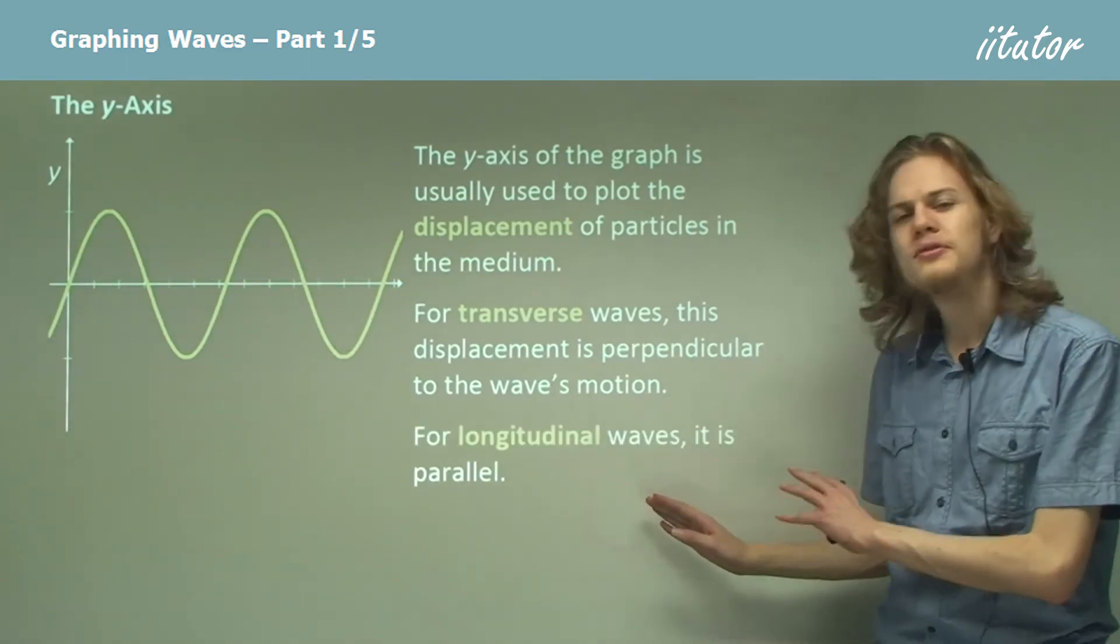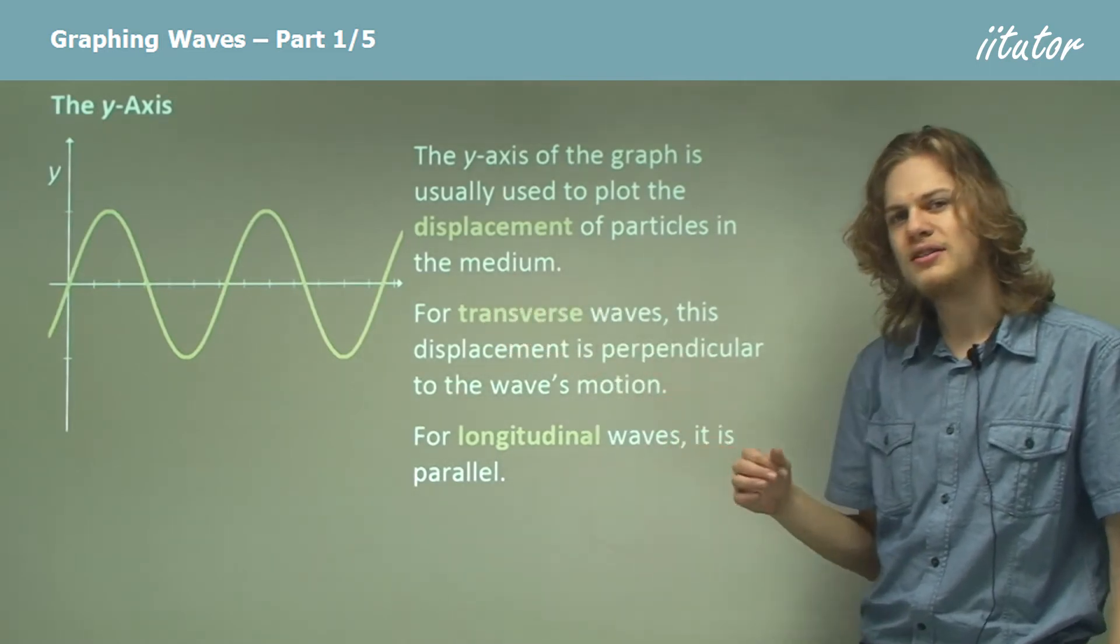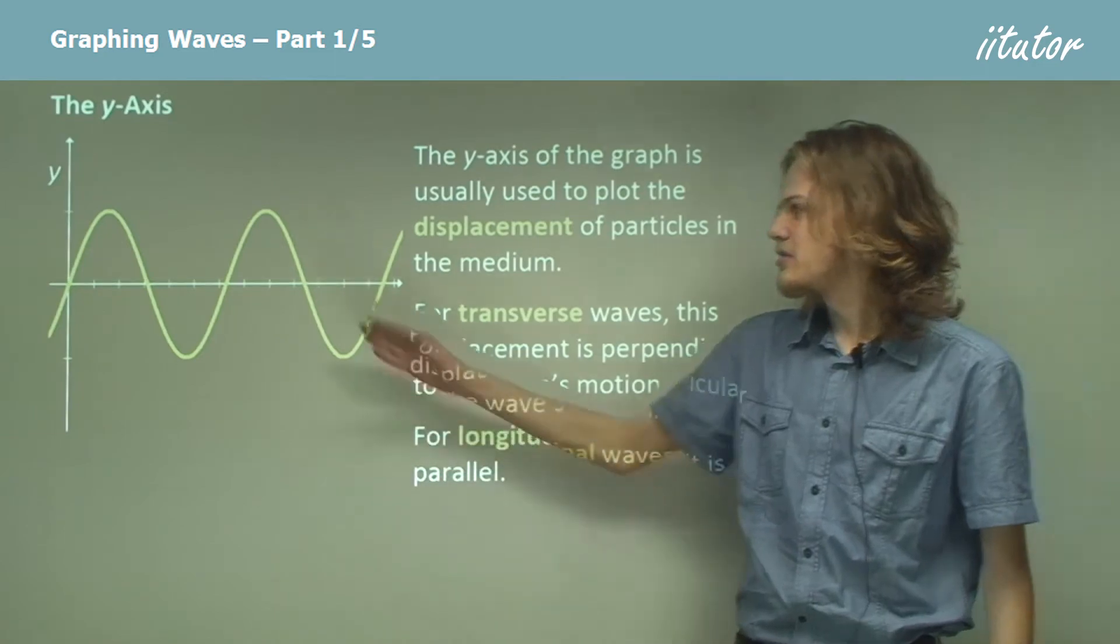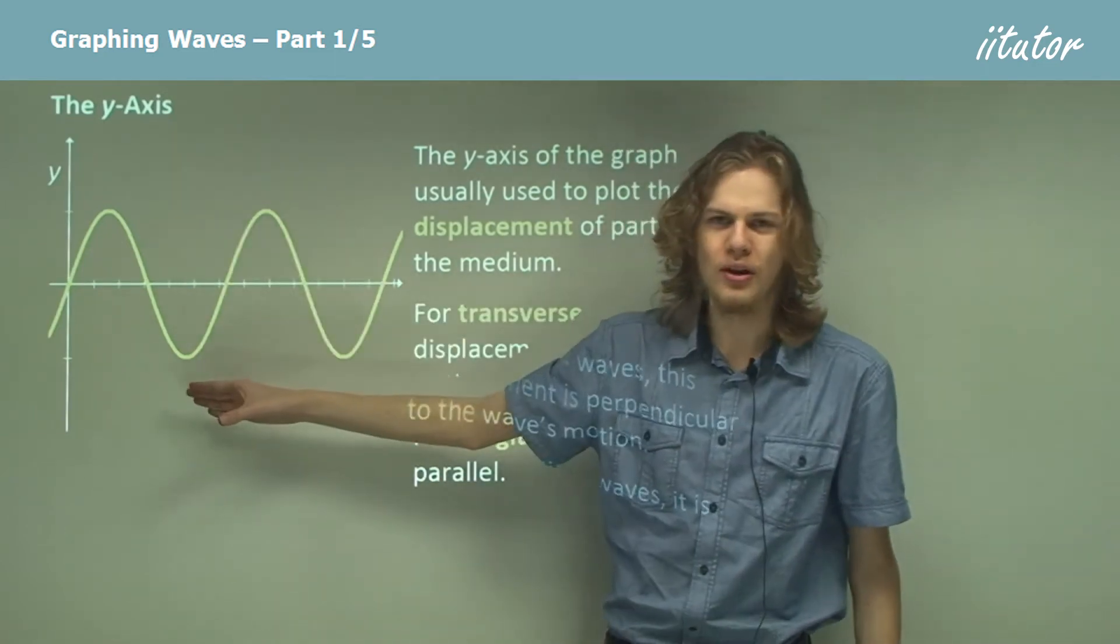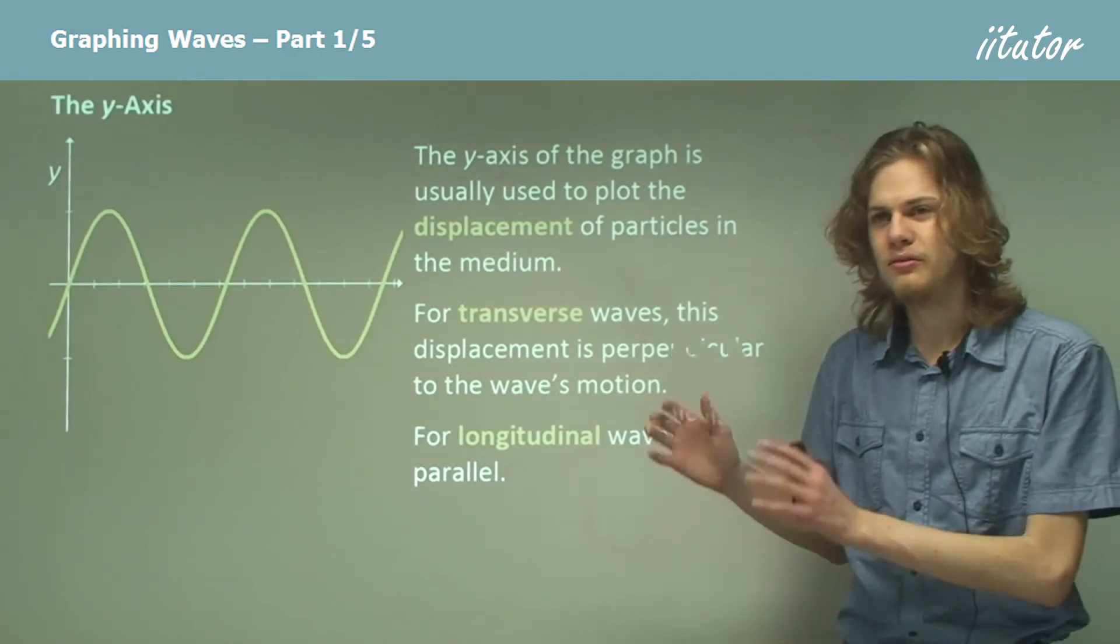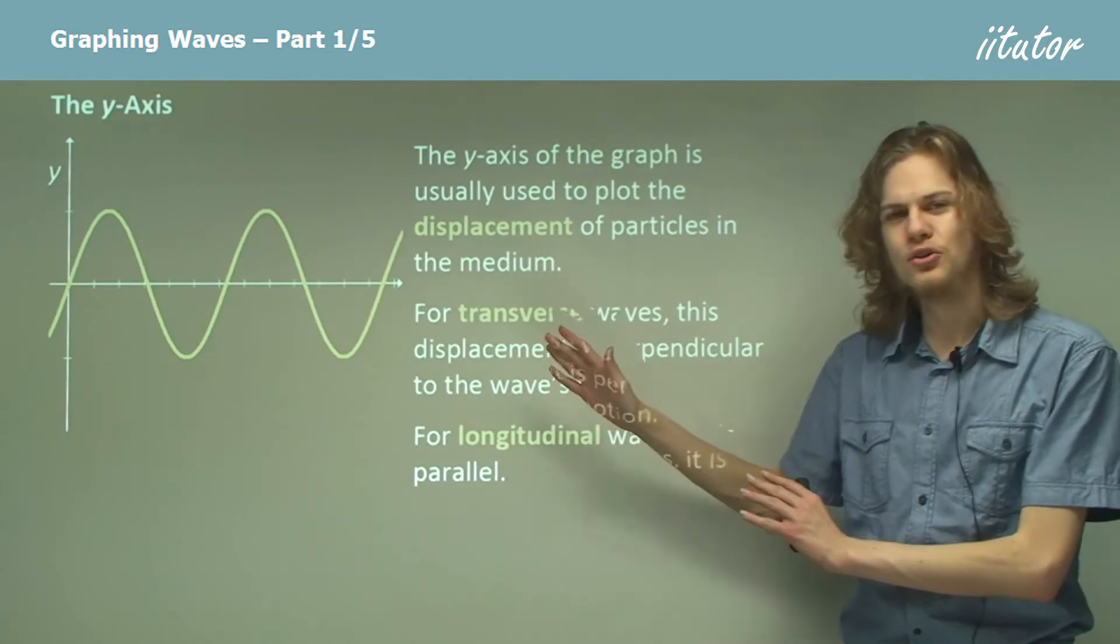For longitudinal waves the displacement is parallel, but we still graph it like this. It just means that instead of being up and down it'll be in the same direction as the wave or in the opposite direction as the wave. So essentially we can use a graph to transform a longitudinal wave into a transverse wave.